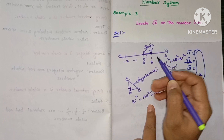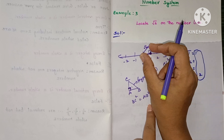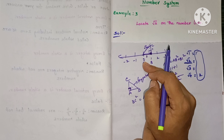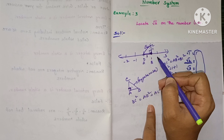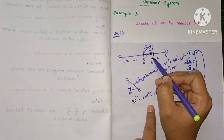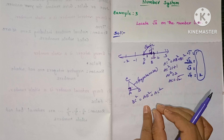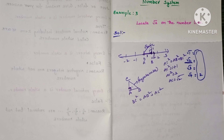Now that AC = √2, take a compass and measure the radius equal to AC. With A as the center and AC as the radius, draw an arc. The point where the arc cuts the number line, between 1 and 2, denotes the value of √2 on the number line.